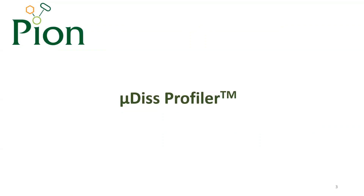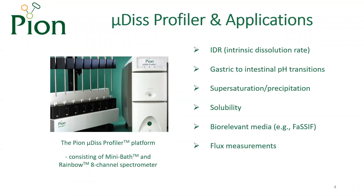Let's make a start with a look at the microdisc profiler, the platform we have used for studying nanoparticulate systems. The microdisc profiler is an eight-channel small-scale dissolution platform that consists of the mini bath and rainbow spectrometer. The mini bath is used for magnetic stirring and temperature control. The rainbow spectrometer consists of a deuterium light source connected to eight fibre optic UV probes and eight individual spectrometers. The fibre optic probes are introduced into microdisc profiler vessels and can be used to determine concentrations of drug substance during experiments by using UV spectroscopy.